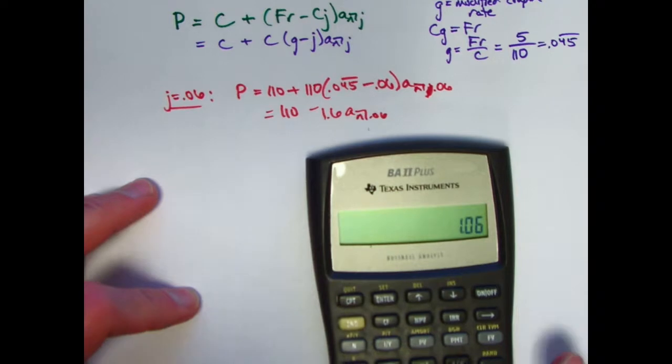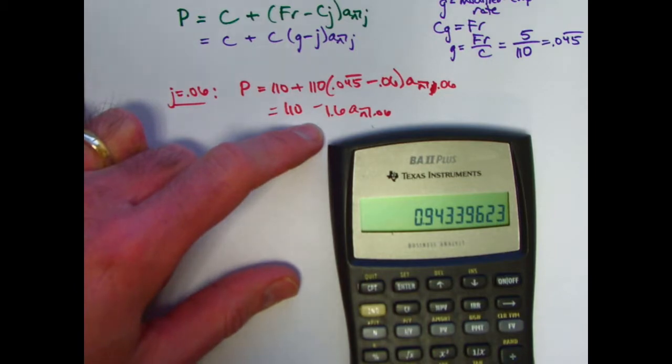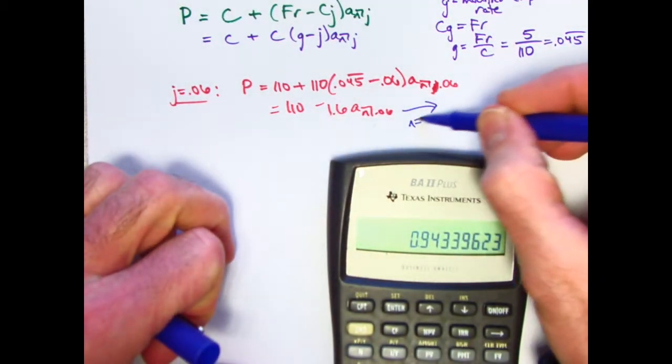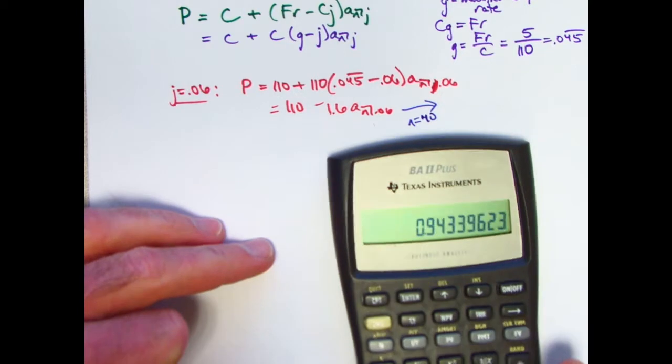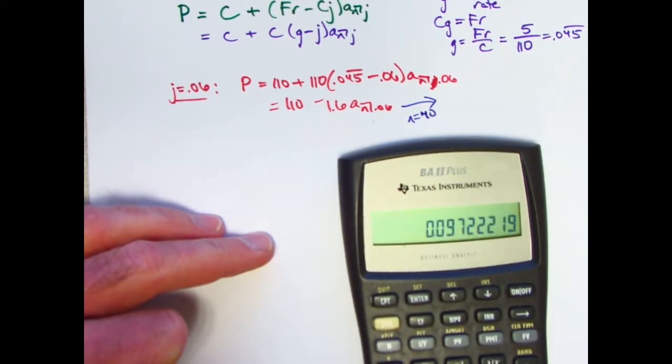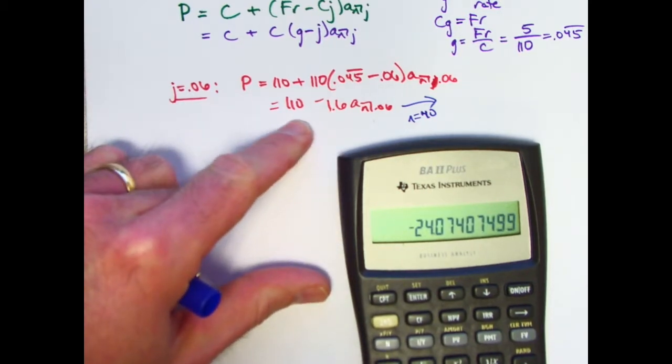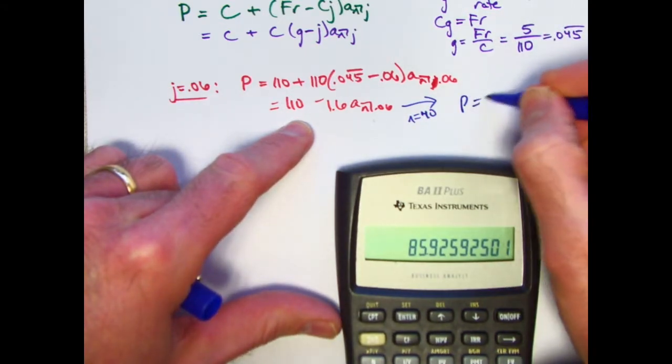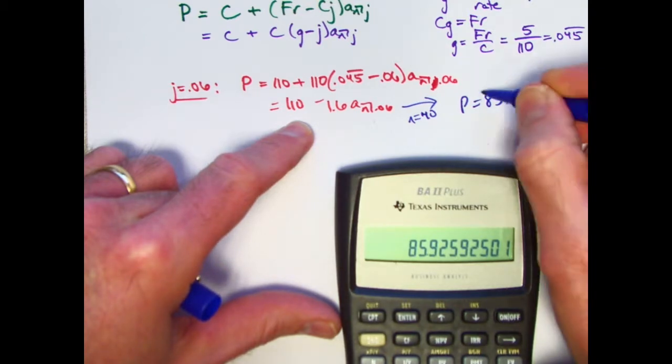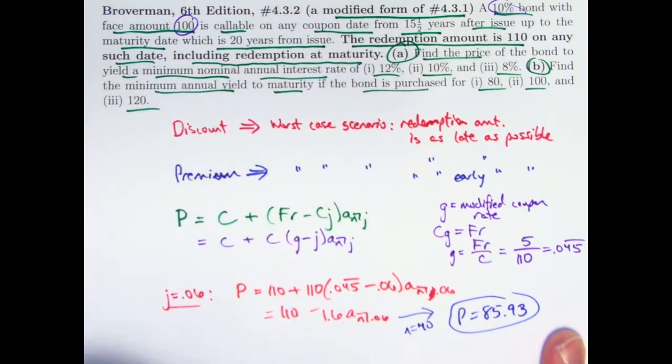Before doing so, let's go ahead and simplify this part. So I've got what's in register 0. Recall 0. Subtract 0.06. This is negative, so this is going to be a situation where you are definitely buying at a discount. Times 110. This simplifies to 110 minus 1.6 times a n .06. And now I need to plug in the largest possible value of n, n equals 40, 20 years from issue here to figure out what the answer is for part one of part a.